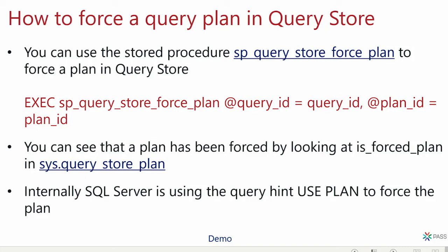It's also possible to use Query Store to force plans, either through the Management Studio GUI or a stored procedure using a query ID and plan ID. Once forced, SQL Server will continue to use that plan even if the server restarts, statistics are updated, or a failover occurs — as long as the plan is physically possible to use. If you drop an index, for example, SQL Server will fall back to normal optimization without an error to the user, unlike plan guides.